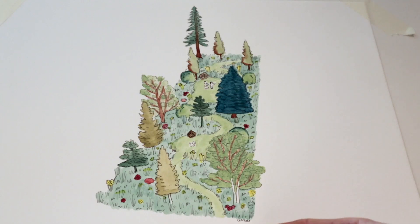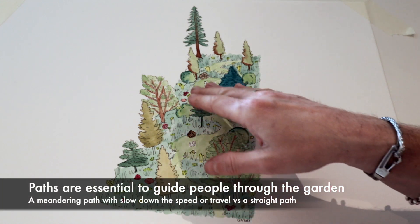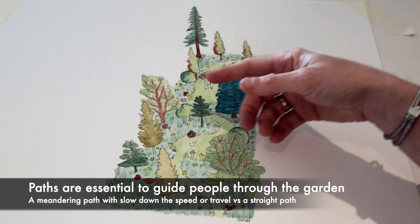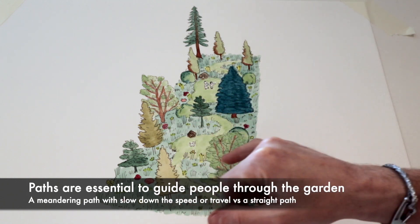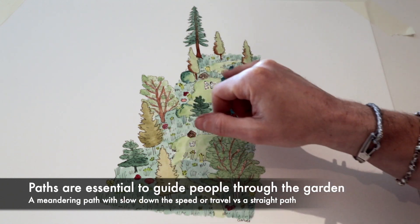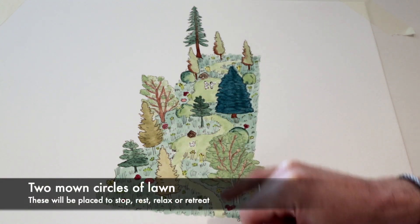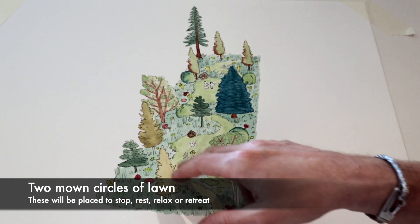So we'll start with the path. We've got this meandering path that's going to float through the garden almost in a serpentine fashion. We've then got these two circular mown parts of lawn. All this path and lawn here are going to be kept clipped and mown, so they'll be short like a regular lawn.